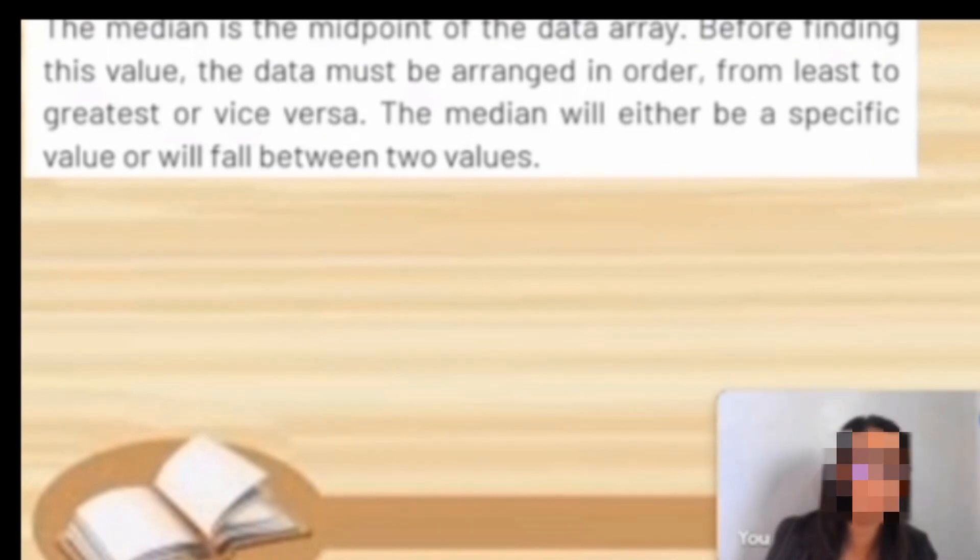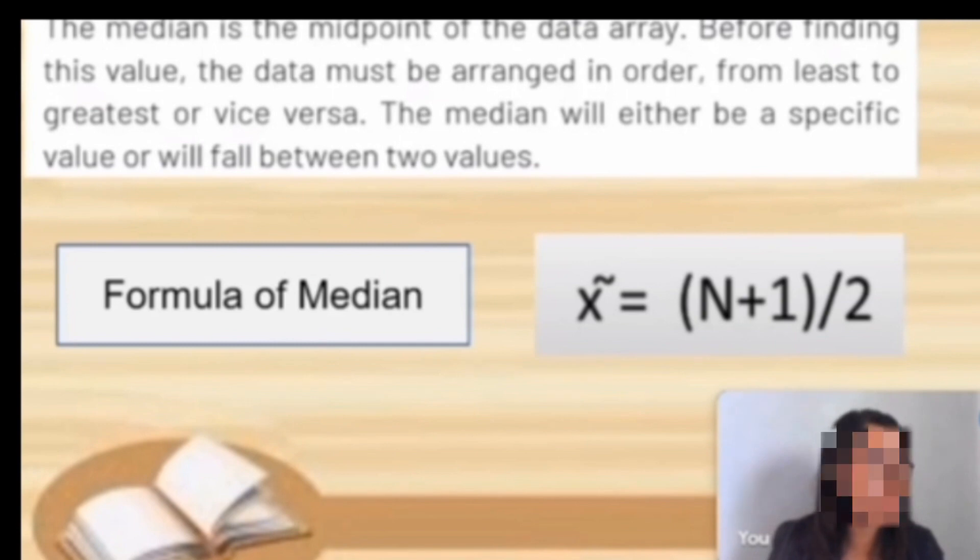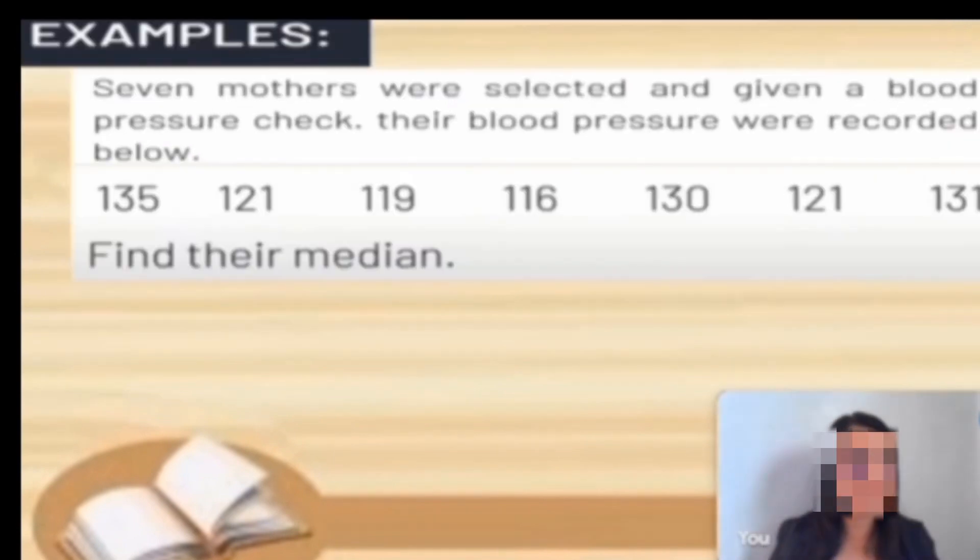Very good, Jenny. Median is the middle value of the data array. Before finding this value, the data must be arranged in order from least to greatest or vice versa. The median will either be a specific value or will fall between two values. Our formula equals n plus 1 divided by 2.